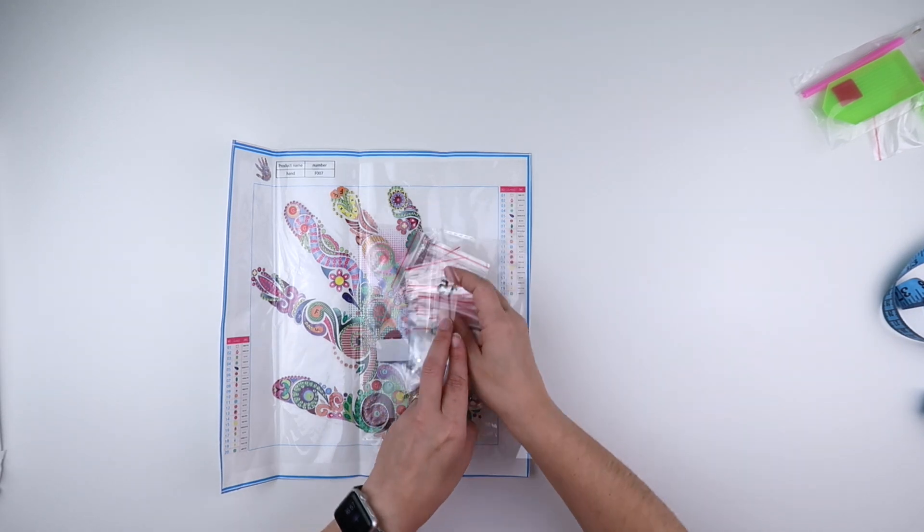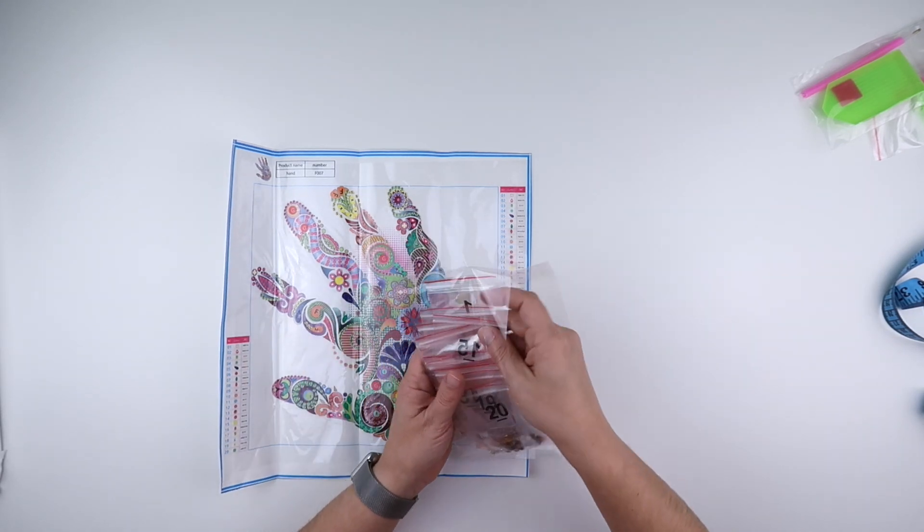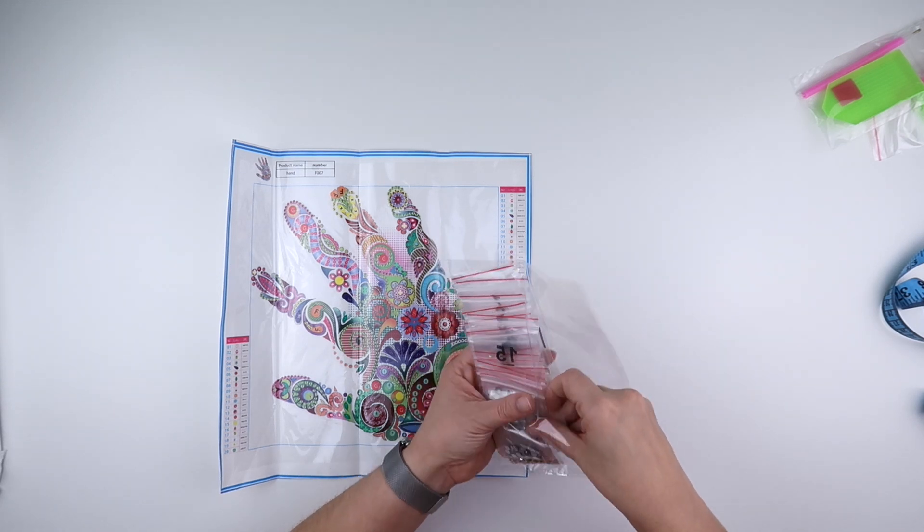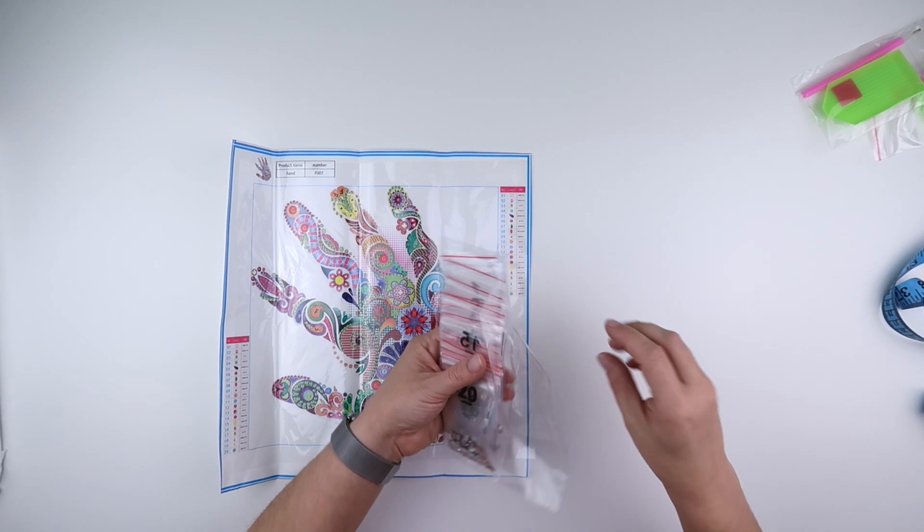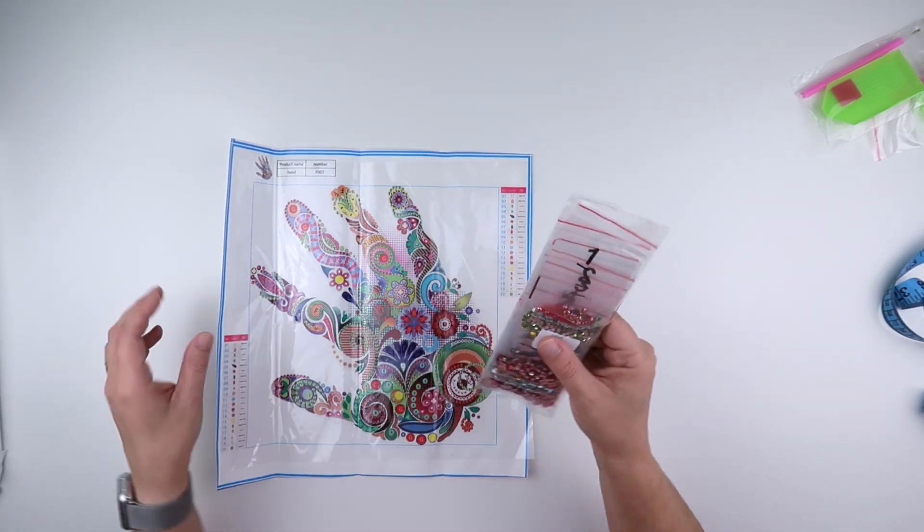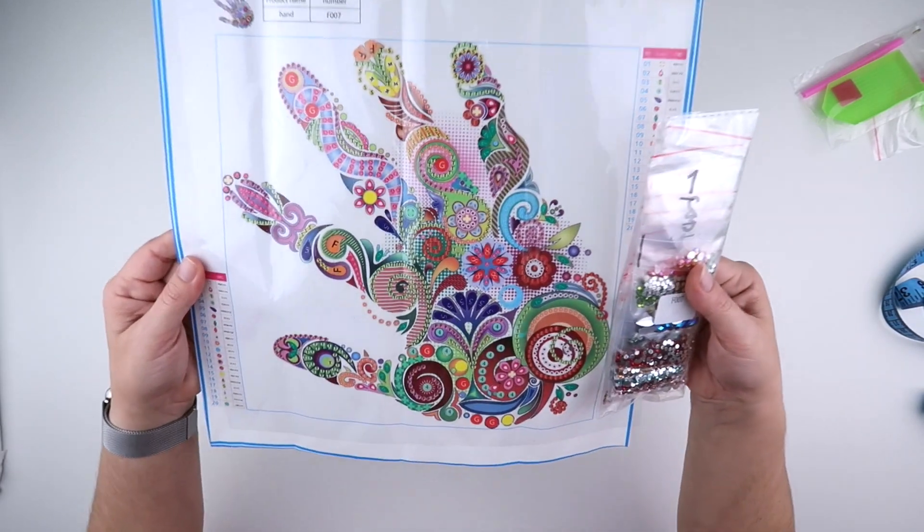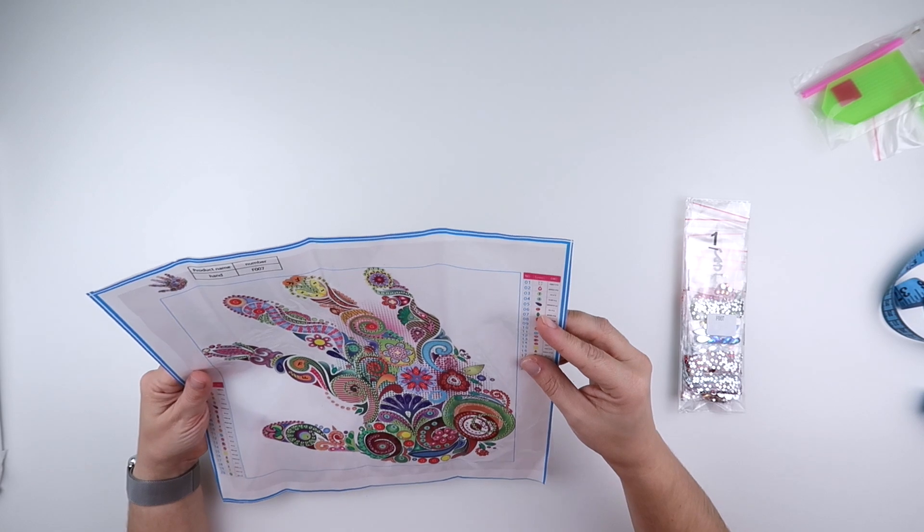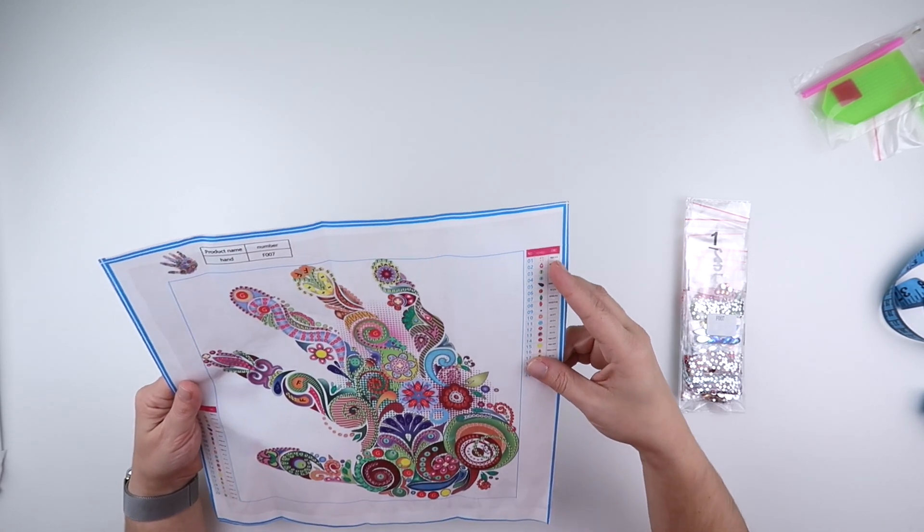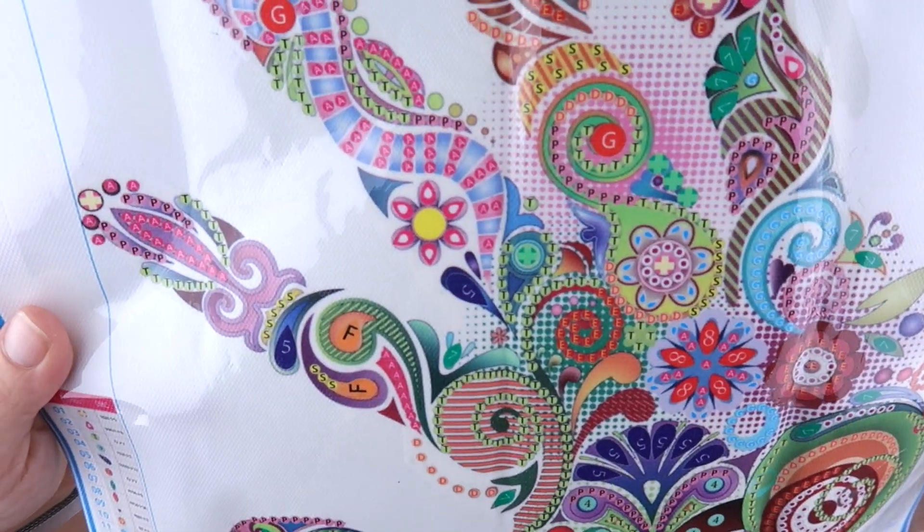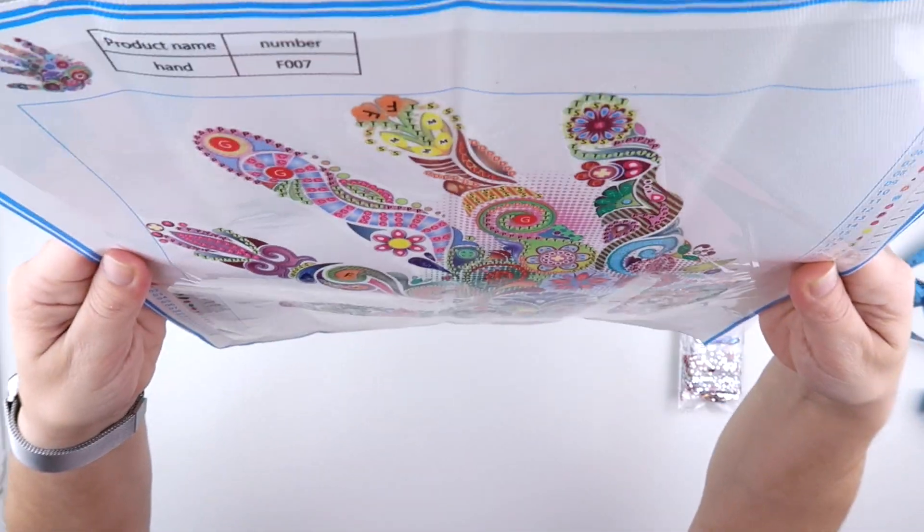I do like that they're in baggies. Because on a painting this sort of size in the special shapes, because it's a partial, I will more than likely just work straight from these bags. So I will just get bag one and I'll do all of bag one. And some of them have symbols, have numbers on them. Some of them are just symbols, but they all look clear, which is fantastic.